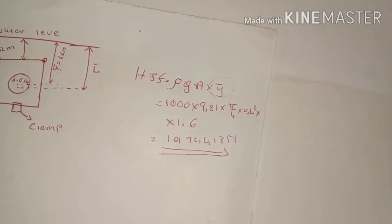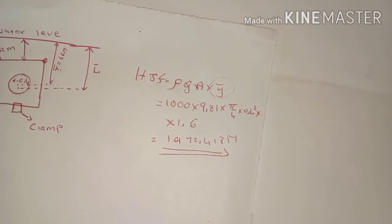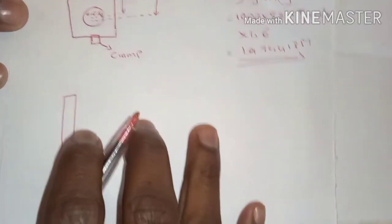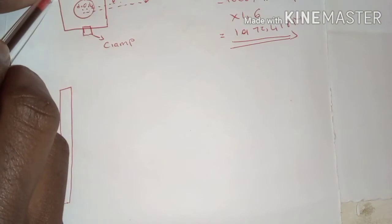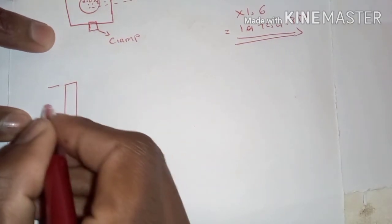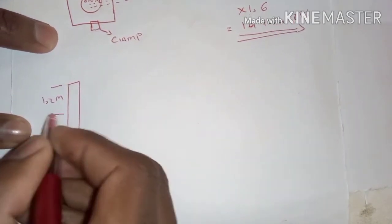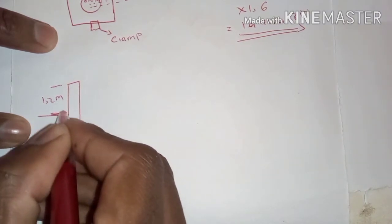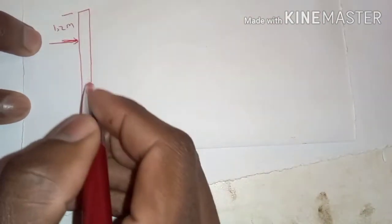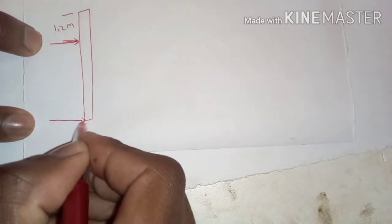For question B, we draw a beam diagram. From the water surface down 1.2 meters is the hinge position. Below the hinge, 0.8 meters further down, is where the clamp is located. We need to find exactly where the hydrostatic force is acting — that is, the center of pressure — which requires us to use the new formula to calculate h-bar.